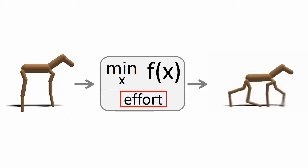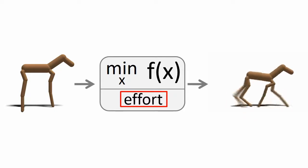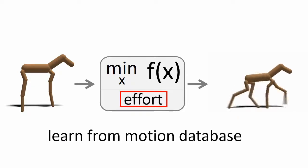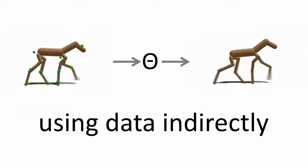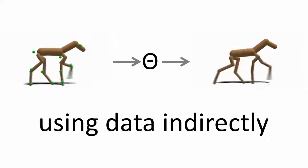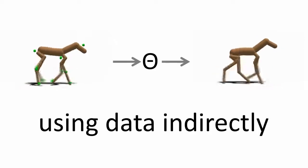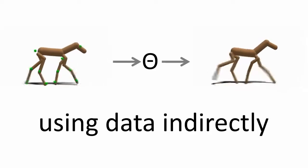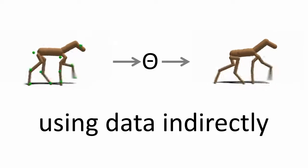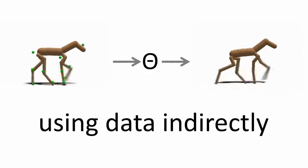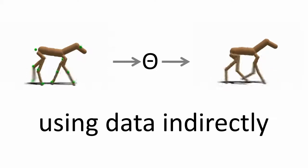Our approach is essentially going to use the motion database to learn a better idea of what this effort should be. As a stepping stone to doing this for animals we don't have any video data for, I'll focus first on how to do this for animals where you do have video data — for how they move in the real world. It's going to use this video data in a kind of indirect way, which turns out to be useful later when we want to apply it to new creatures.